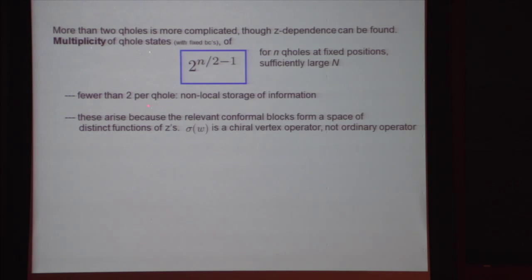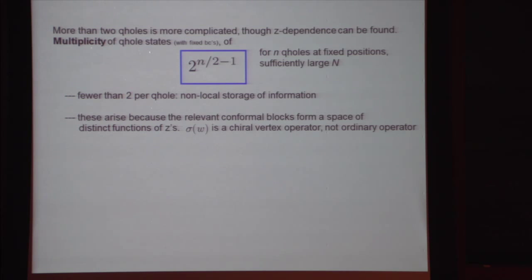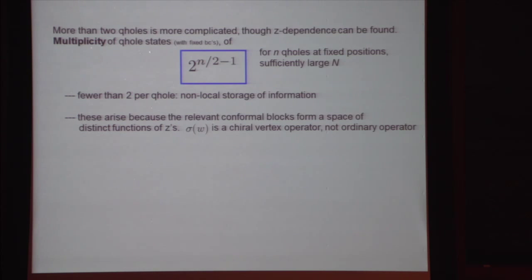This number of states is less than two, so it cannot possibly be the case that this is due to some local degree of freedom sitting on each quasi-hole, because that can only give us an integer to the power N. Whereas what we have here is square root 2 to the power N. This tells us directly that the information stored in the state about which state we're in must be stored non-locally. That's the real point about these functions.